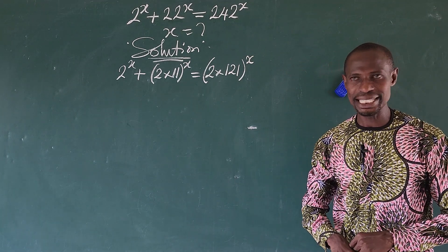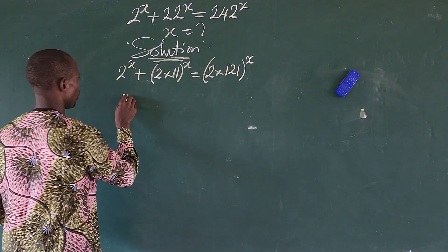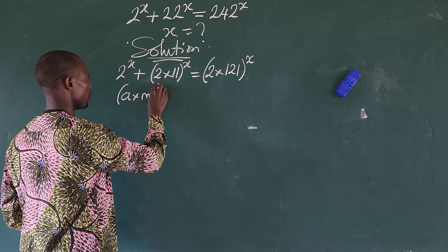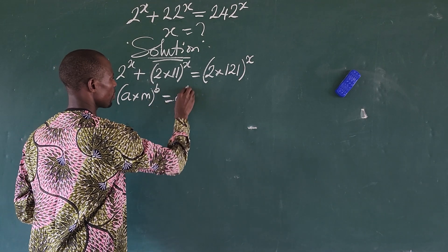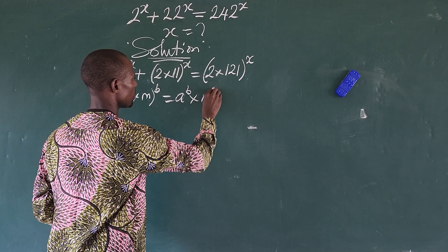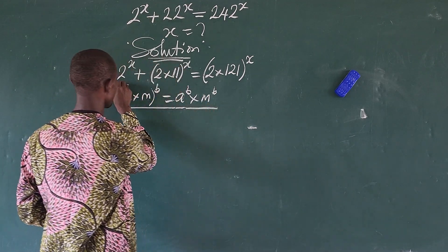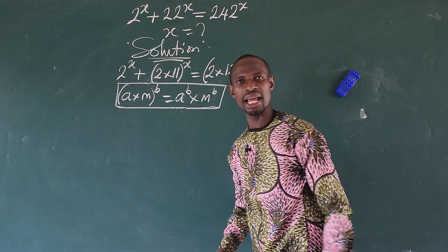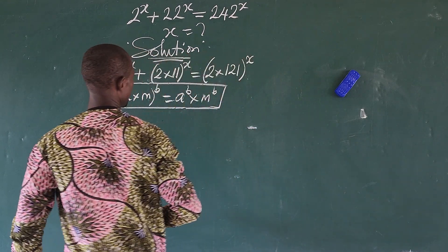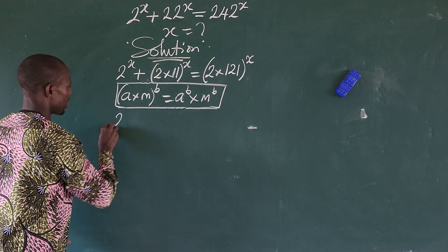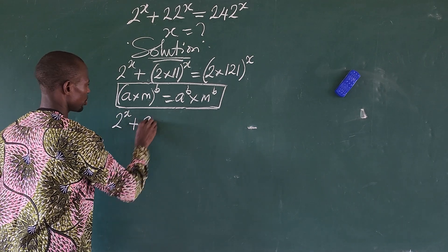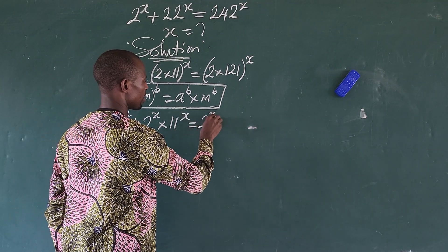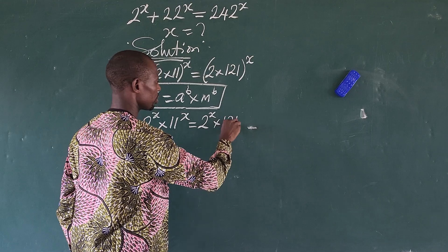Now remember the law of indices which says that if you have a times m, all raised to the power of b, this is equal to a to the power of b times m to the power of b. We apply this law to open up each term, giving us 2 to the power of x plus 2 to the power of x times 11 to the power of x, equal to 2 to the power of x times 121 to the power of x.